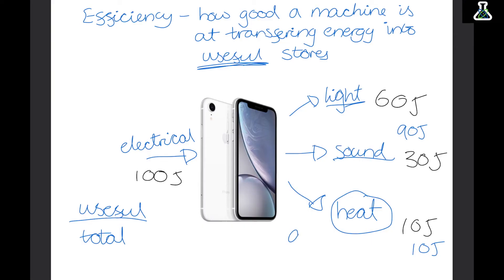Now if we do the useful energy, so 90, over the total energy which was the 100 we put in, we get 0.9. So this phone has an efficiency of 0.9. Now efficiency will always be below 1 because if it's not it means it's 100% efficient and nothing in the world is that efficient.